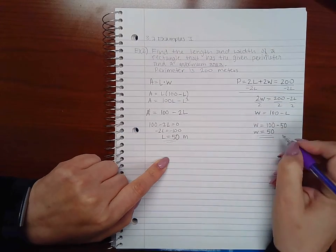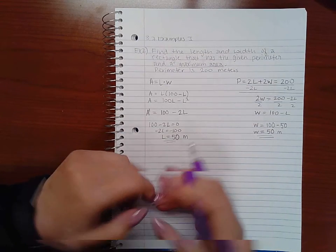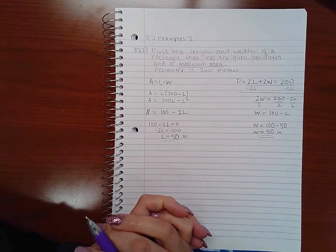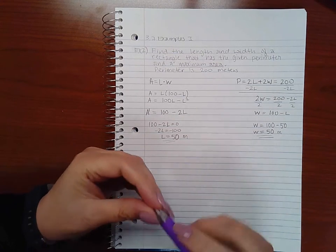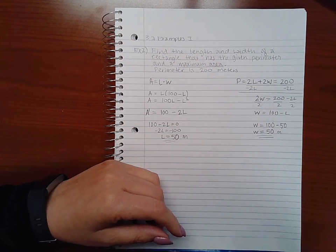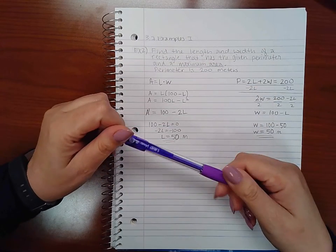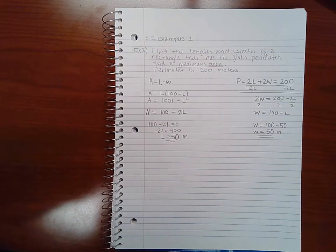That means the length is 50 meters and the width is 50 meters as well. So you'll notice again I end up with a square instead of a rectangle. Normally when you're maximizing area or minimizing perimeter, you always end up with the square. It's just a matter of finding the actual measurement for that length and that width.